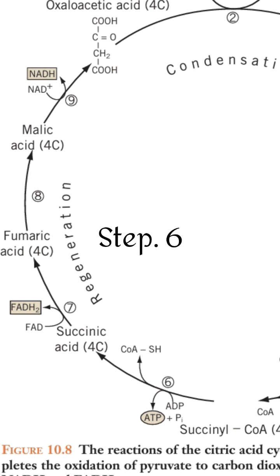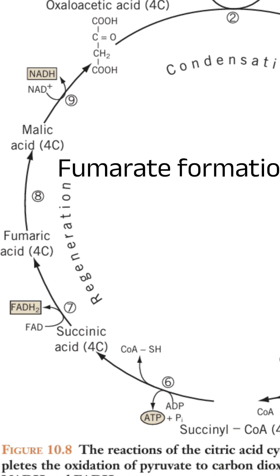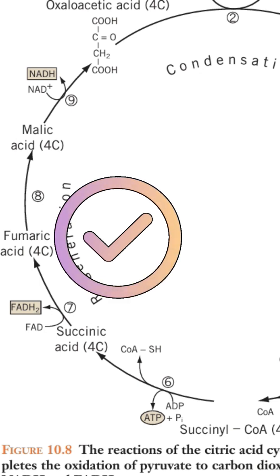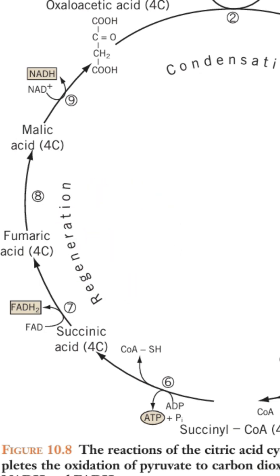Step 6: Fumarate formation. In the sixth step, succinate is oxidized and converted to fumarate in the presence of succinate dehydrogenase enzyme. In this step, FADH2 molecule is produced.